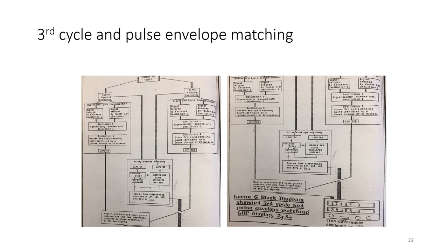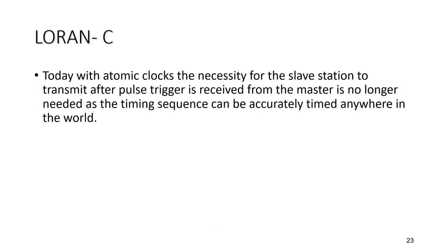Having identified the third cycle points of both the master and slave, a fine comparison is made to get the difference of time or phase, and hence microseconds and tenths of a microsecond. Today, with atomic clocks, the necessity for the slave station to wait for a trigger pulse from the master is no longer needed, as the timing sequence is accurately maintained anywhere in the world. These are the same atomic clocks used for GPS — highly precise. They measure the time difference so accurately that the receiver can easily distinguish between master and slave transmissions, converting this difference into a distance and then a line of position to plot the ship's position at sea.